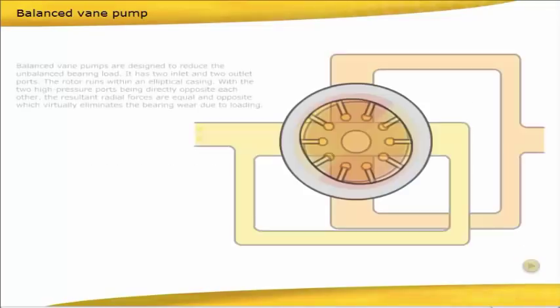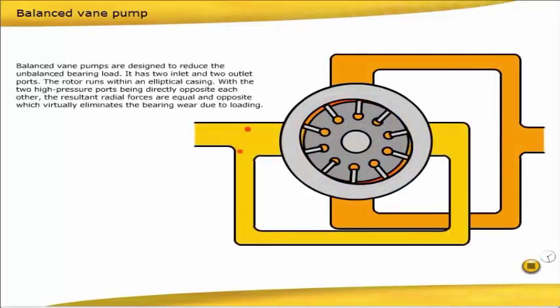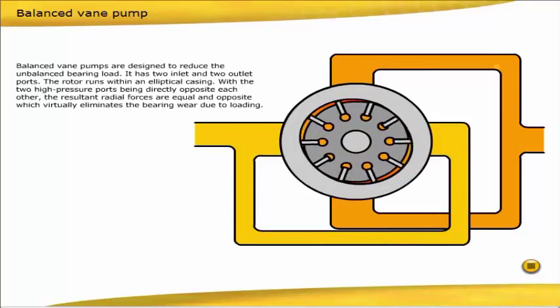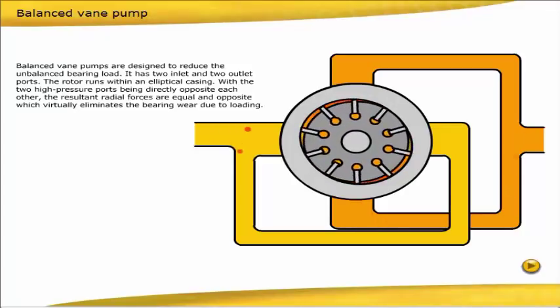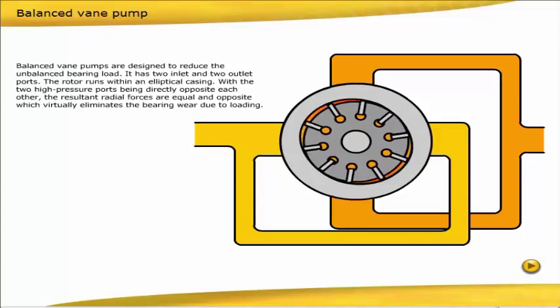Balanced vane pumps are designed to reduce the unbalanced bearing load. It has two inlet and two outlet ports. The rotor runs within an elliptical casing. With the two high-pressure ports being directly opposite each other, the resultant radial forces are equal and opposite, which virtually eliminates the bearing wear due to loading.